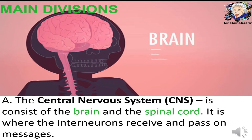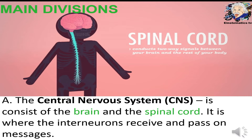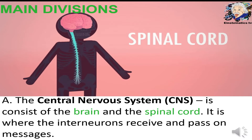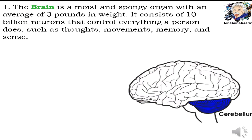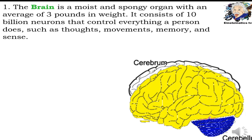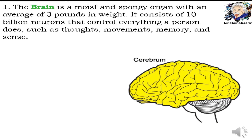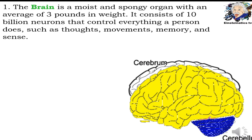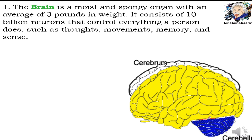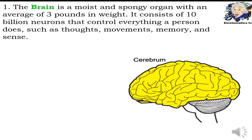The central nervous system is comprised of the brain and the spinal cord. It is where the interneurons receive and pass on messages. The brain, as we all know, is the control center of the body, and without it, man will not survive. The brain consists of 10 billion neurons that control everything a person does, such as thoughts, movements, memory, and senses. The brain is a moist and spongy organ with an average weight of 3 pounds.